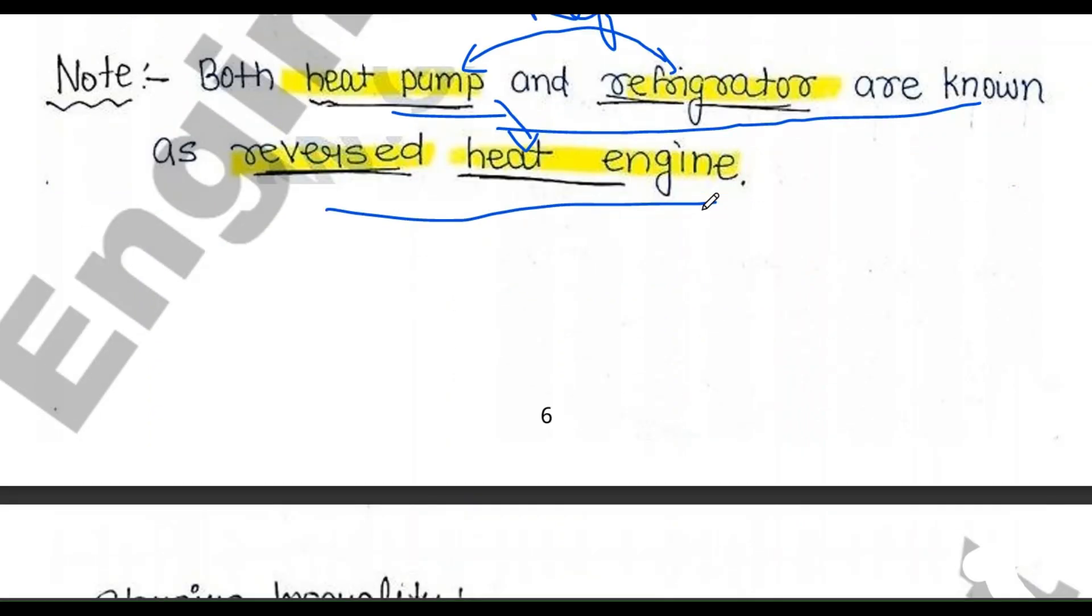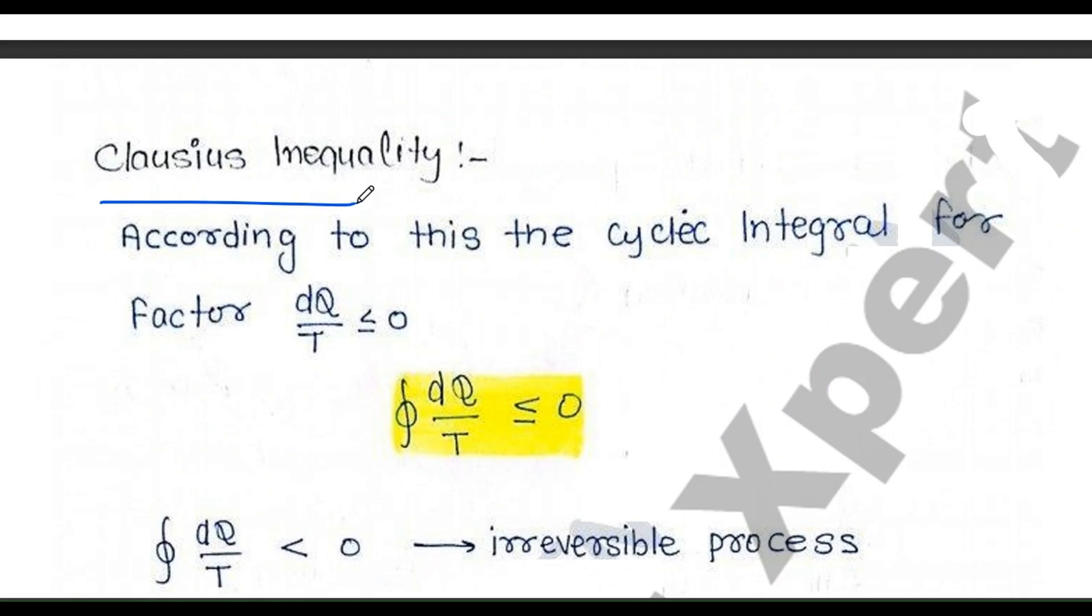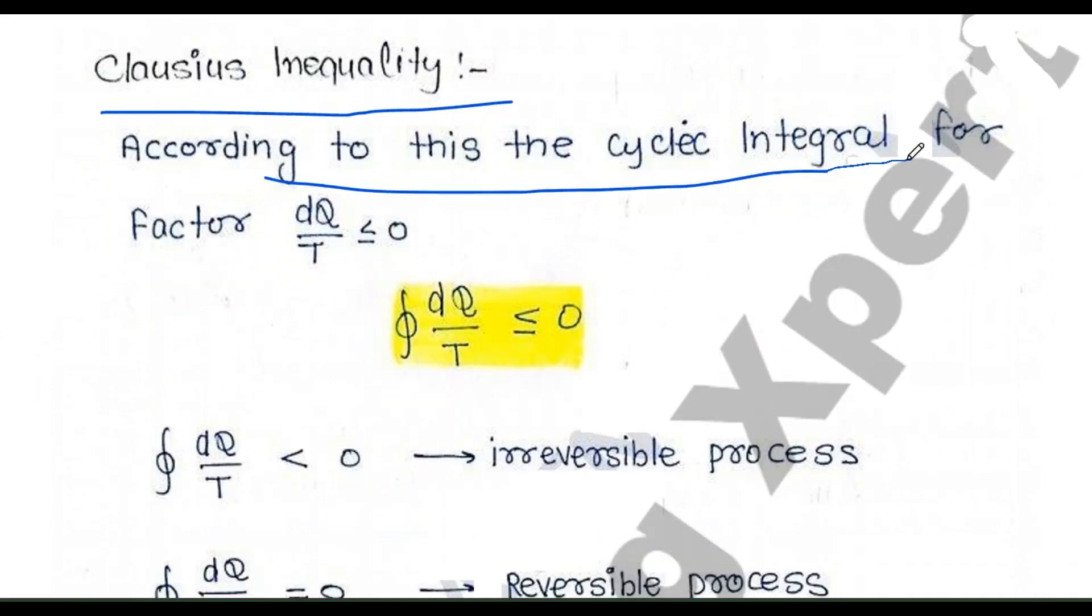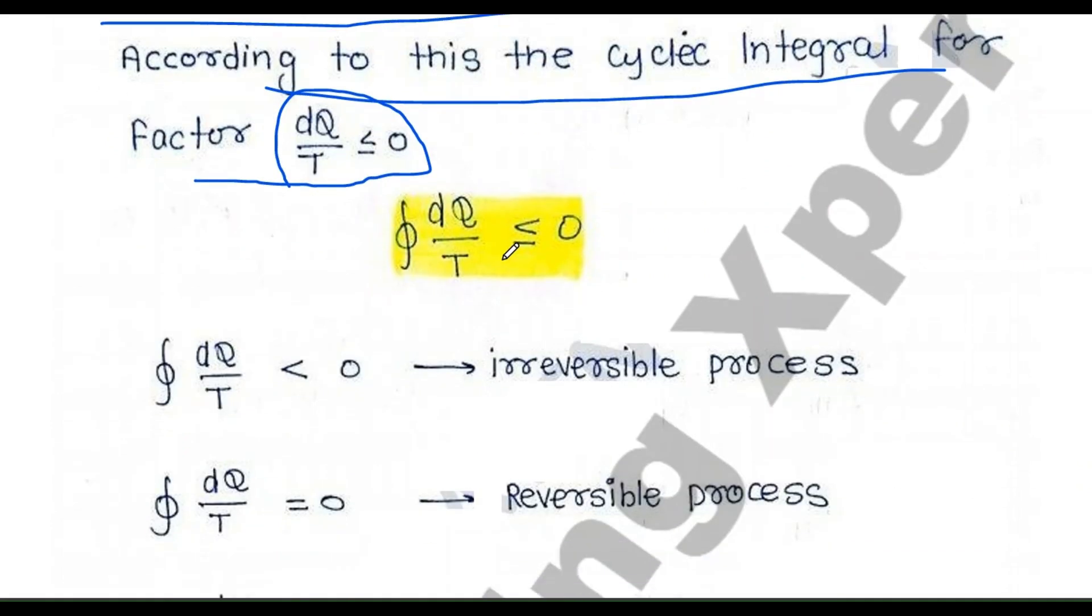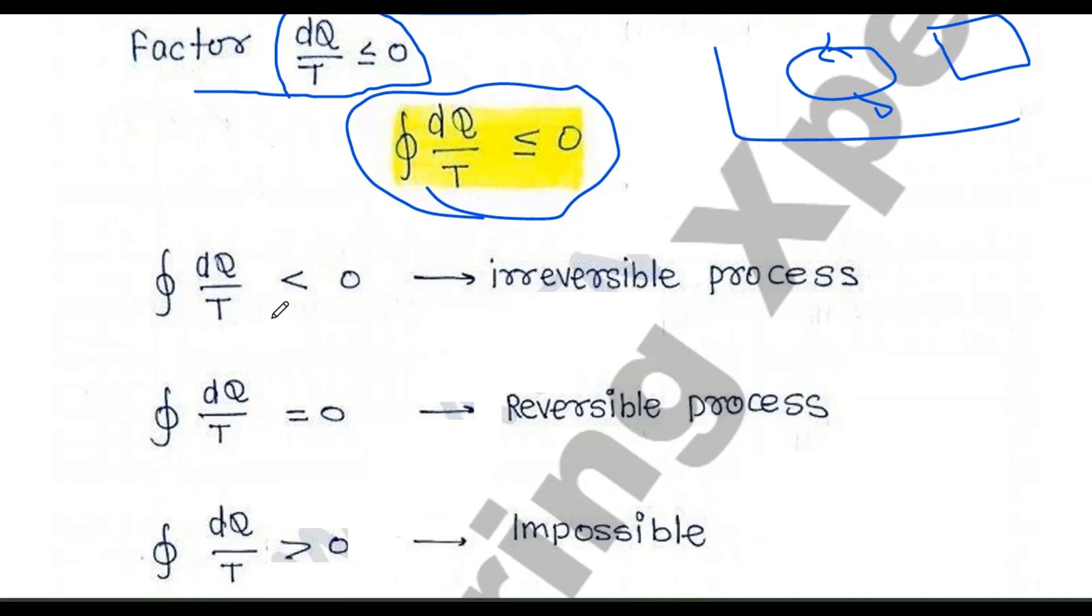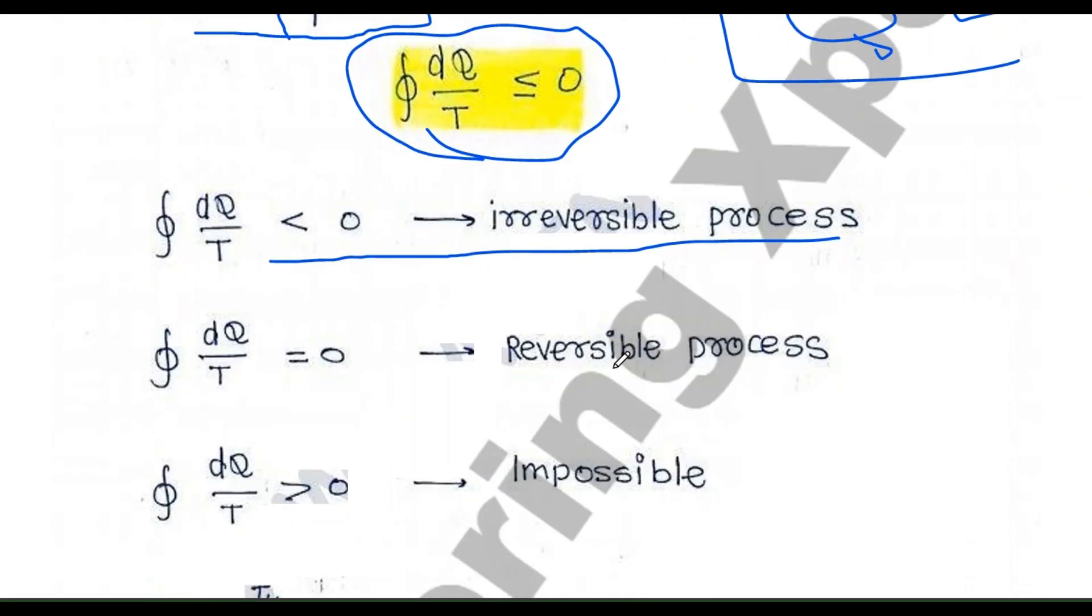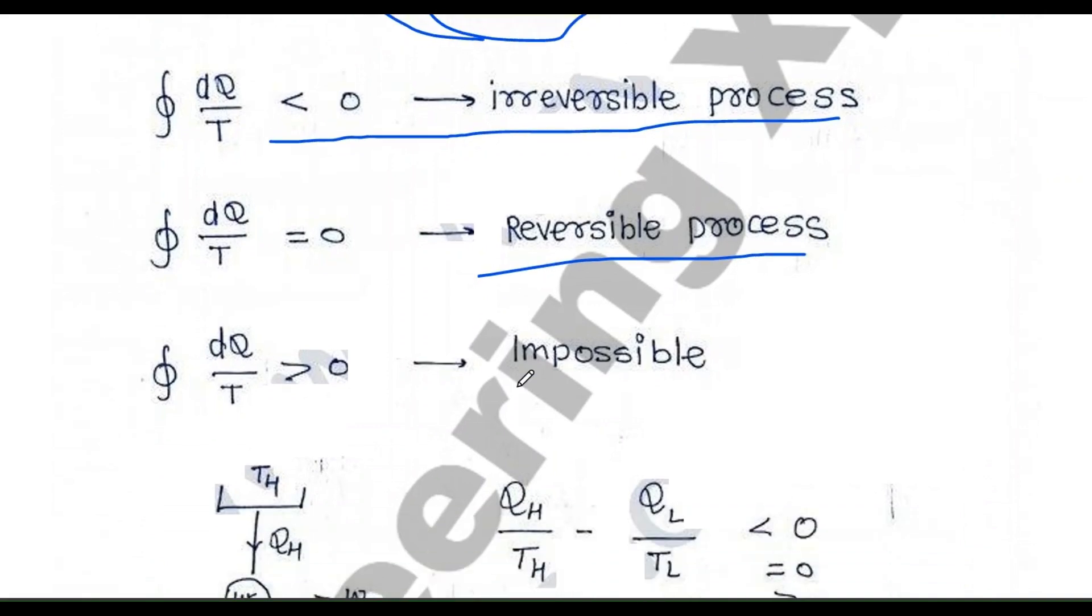Let's study one more new thing: Clausius inequality. According to this, the cyclic integral of dQ/T is less than or equal to zero. Cyclic integral means over a cycle. Suppose this cycle can be any shape, but it should complete a cycle. The cyclic integral of dQ/T will always be less than or equal to zero. It is less than zero for irreversible process and equals zero for reversible. It's impossible to have greater than zero for any process.